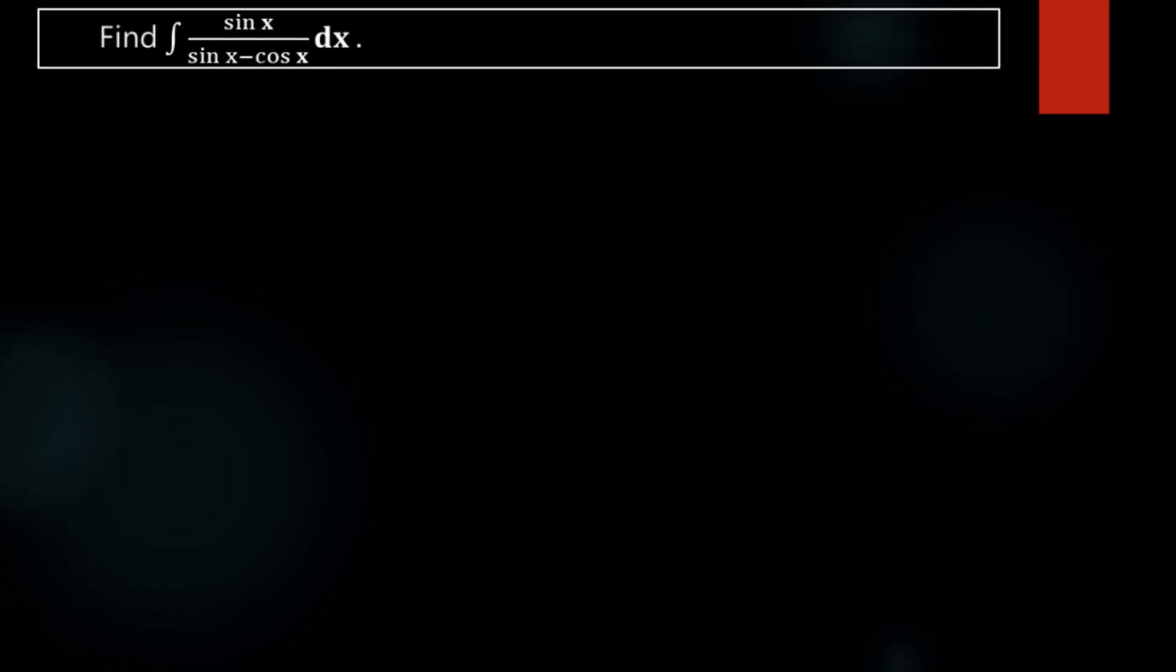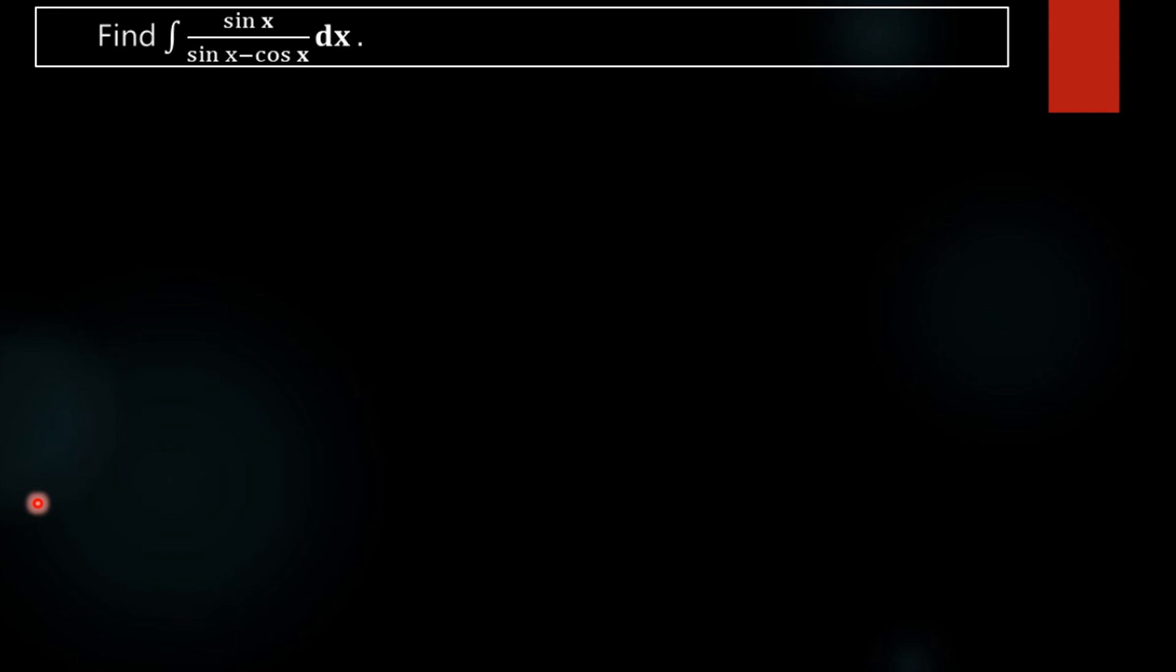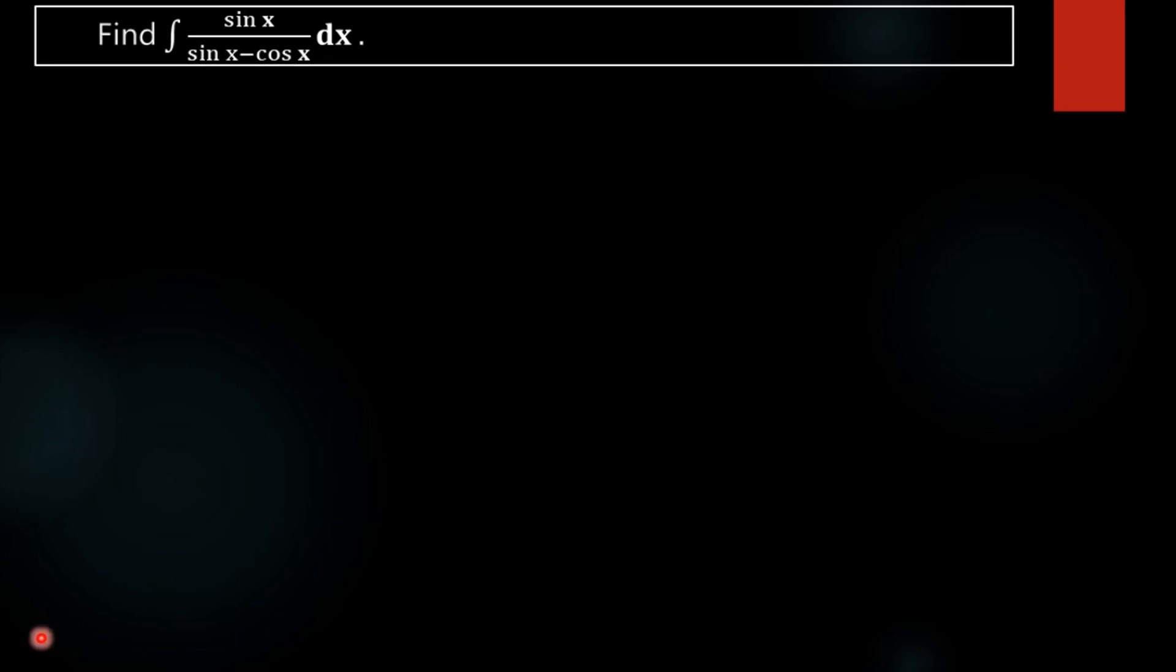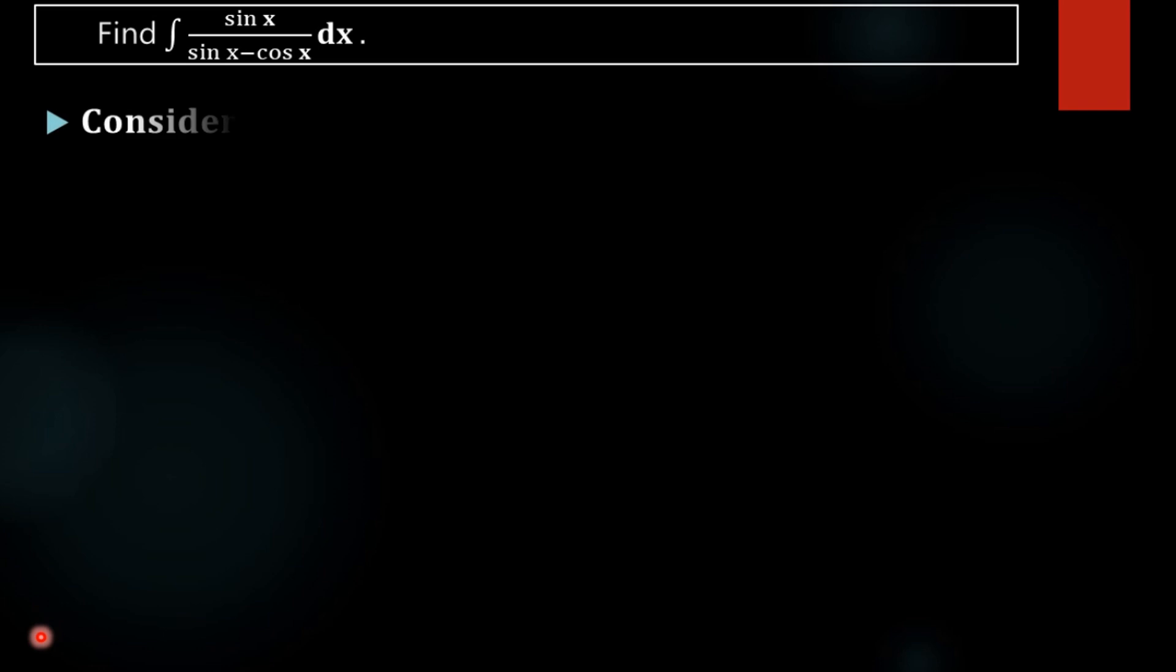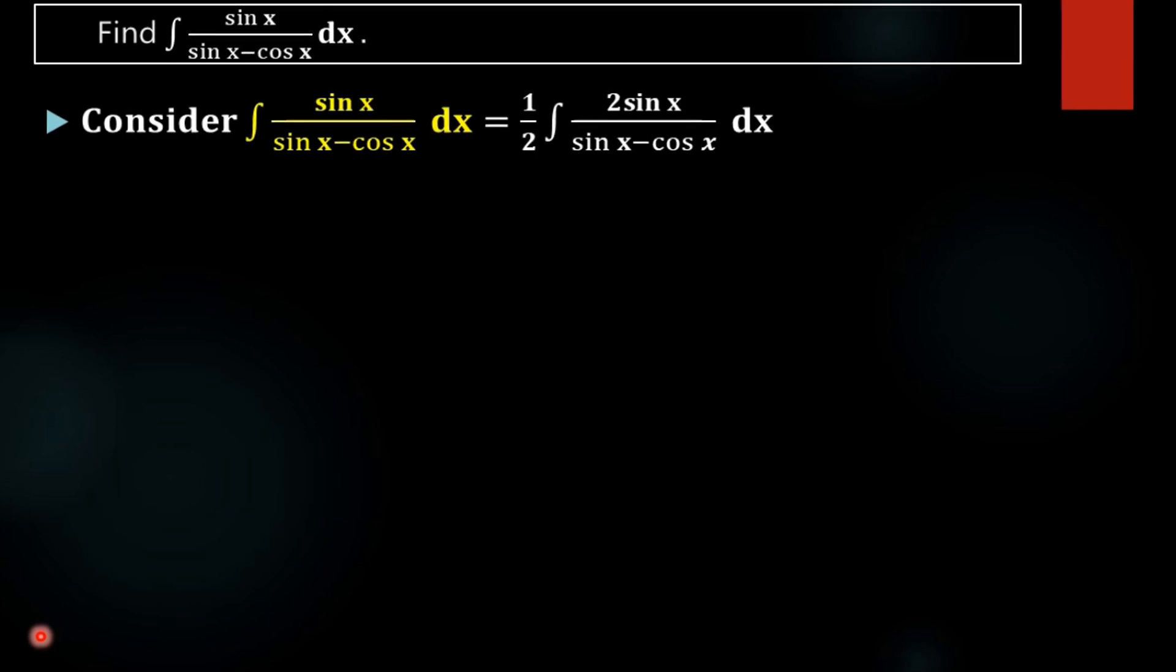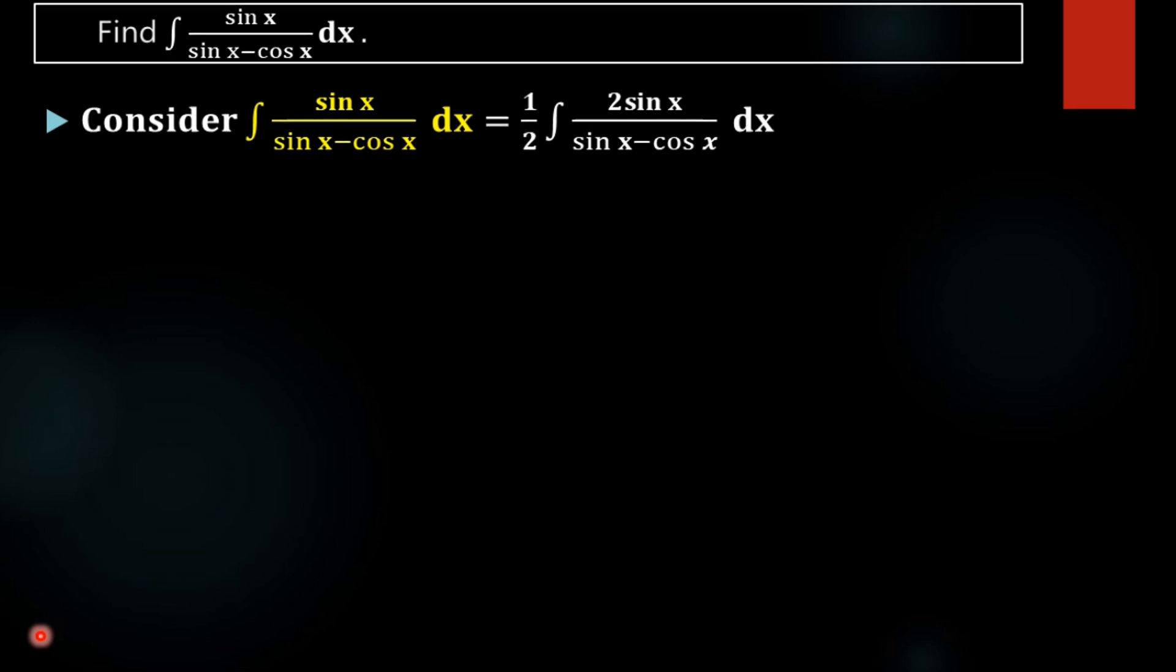Find the integral of sin x divided by sin x minus cos x. We have to find the value of this integral. This integral is not in an integrable form, so in order to make it integrable, we have to make some simplification or changes to this function.